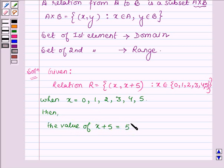when x is 0, x plus 5 is 5. When x is 1, x plus 5 becomes 6. When x is 2, then x plus 5 becomes 7. When x is 3, then 3 plus 5 becomes 8. And when x is 4, 4 plus 5 becomes 9. And when x is 5, then 5 plus 5 becomes 10.